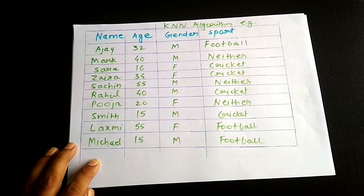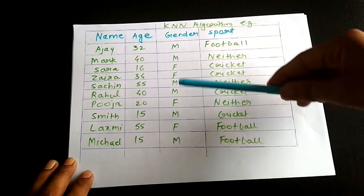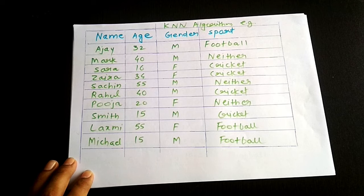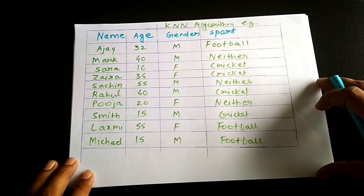We surveyed some people to get data with correct classifications, and this survey data is our reference data. With this correctly classified reference data, KNN can make predictions — for example, predicting what class of sport a new person named Angelina belongs to.